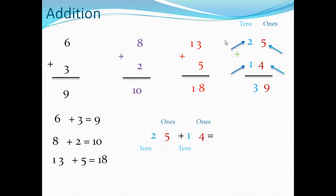If you have two digits plus two digits, start from units. Where is units? The first number on the right. In 25, the first number on the right is five, so five is in the ones place. In 14, four is in the ones place. So five plus four is nine; two plus one is three.